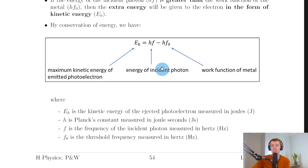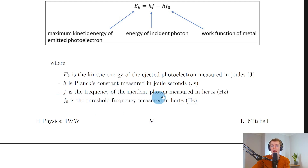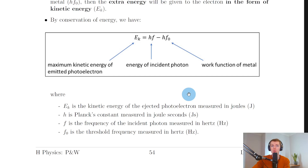In other words, the difference between these two energies tells us the energy that the electrons have when they've been emitted from the metal surface, and this energy is in the form of kinetic energy. EK is the kinetic energy of the ejected photoelectron measured in joules; h is Planck's constant in joule-seconds, which is on the data sheet; f is the frequency of the incident photon in hertz; and f₀ is the threshold frequency in hertz.